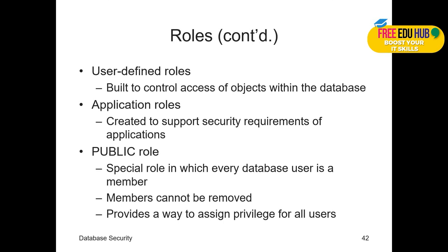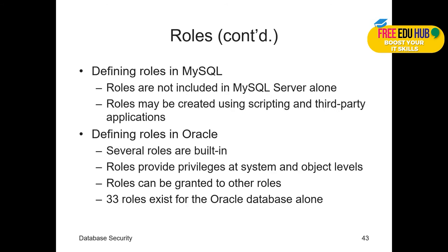User-defined roles are built to control access to objects within the database — defining who can do what and what permissions they have. Application roles are created to support the security requirements of an application. The public role is a special role in which every database user is a member; members cannot be removed, and it provides a way to assign privileges to all users.